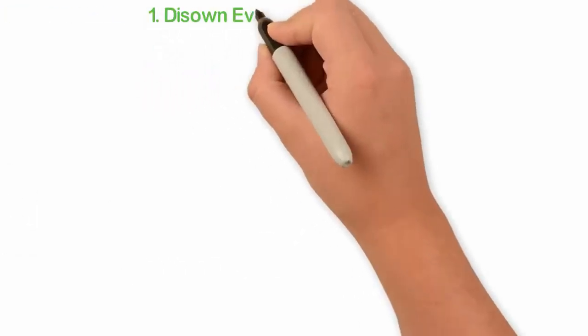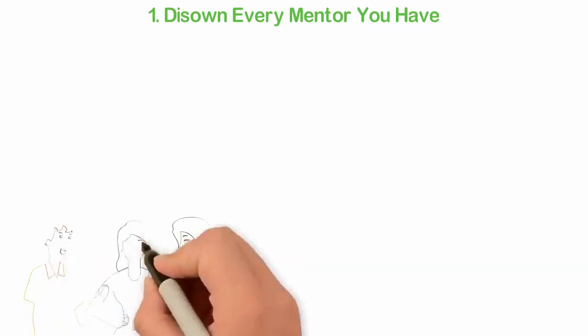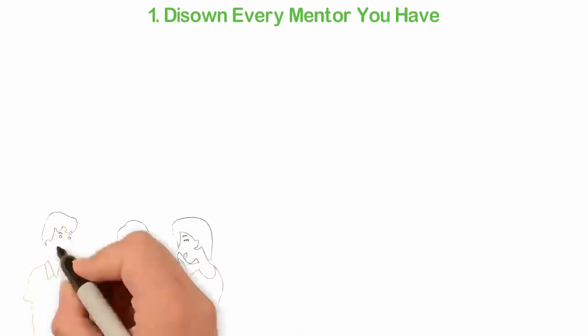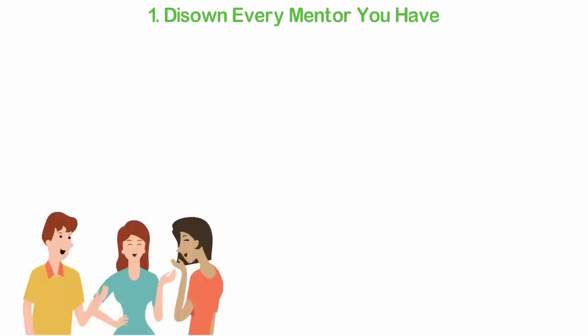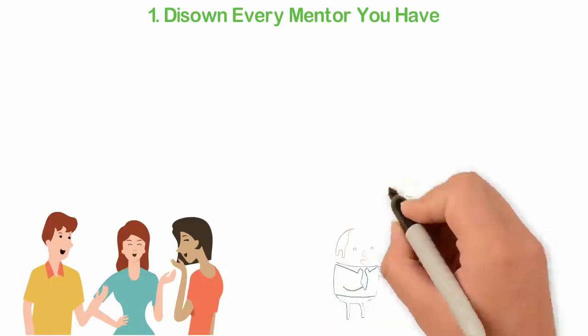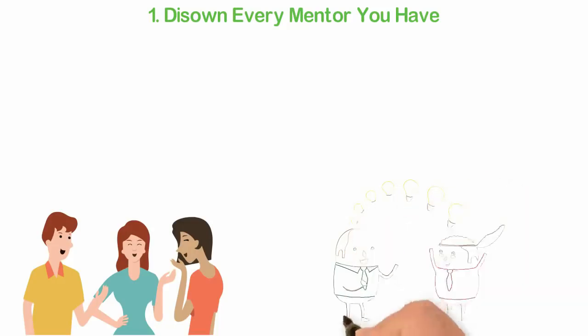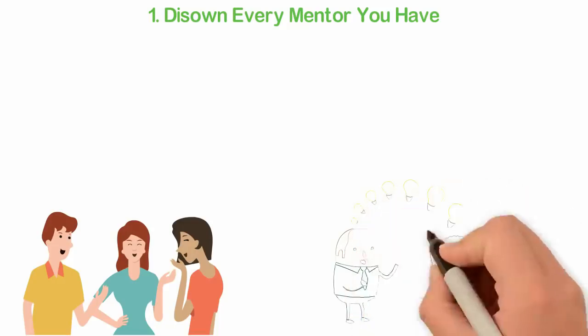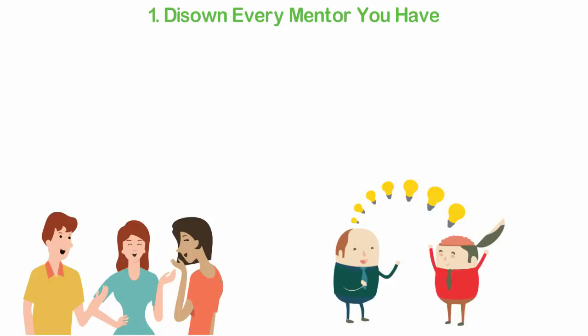Number one: Disown every mentor you have. Well, I don't mean that you should legally get rid of everyone in your life. I simply mean that you should stop taking their advice or spending much time with them, except they are positive-minded. Growing up in Africa, the culture of my tribe requires that I listen to and follow the advice of everyone who is older than me. But at about the age of 19, I started revolting against the advice of my family members, especially their advice about money.